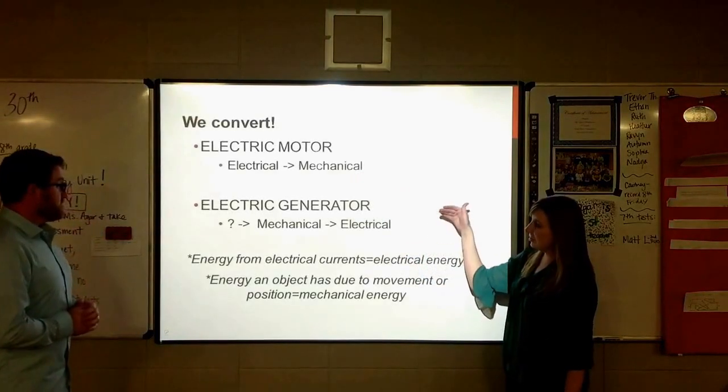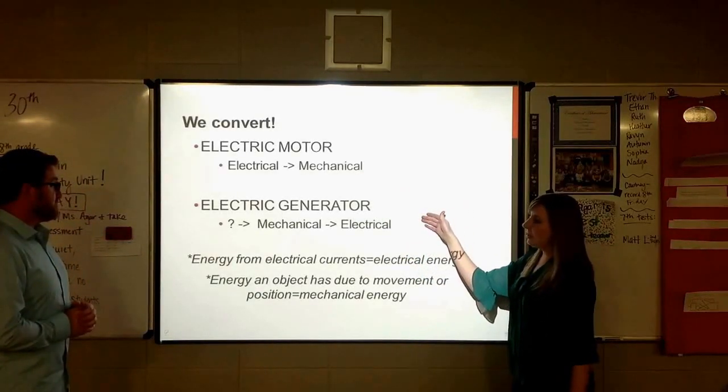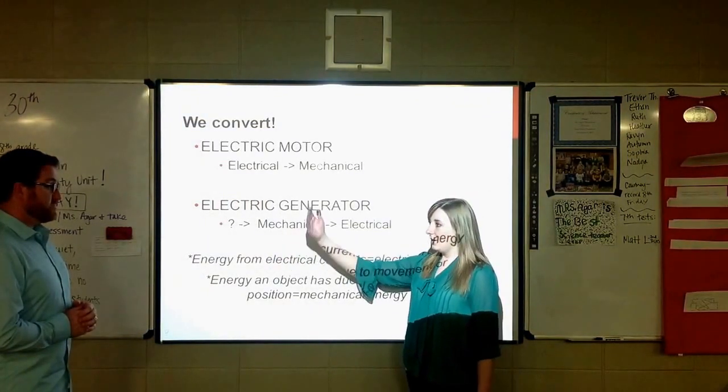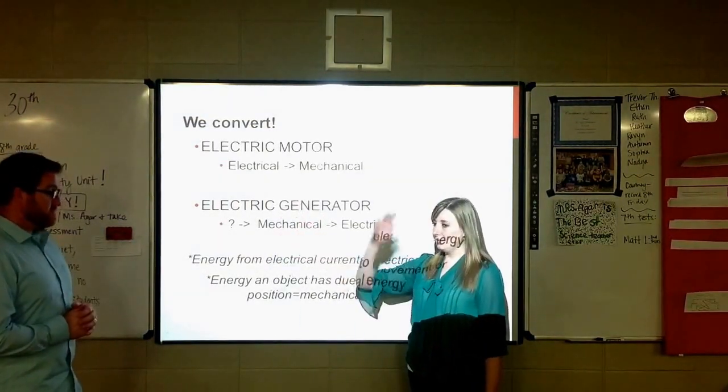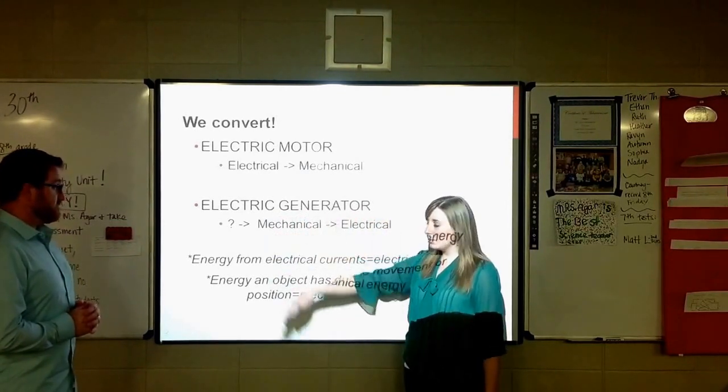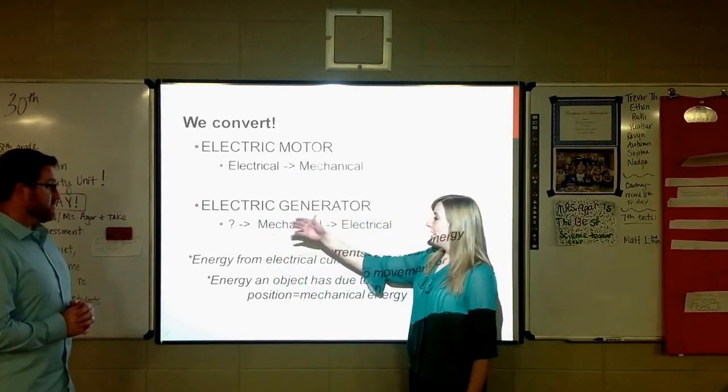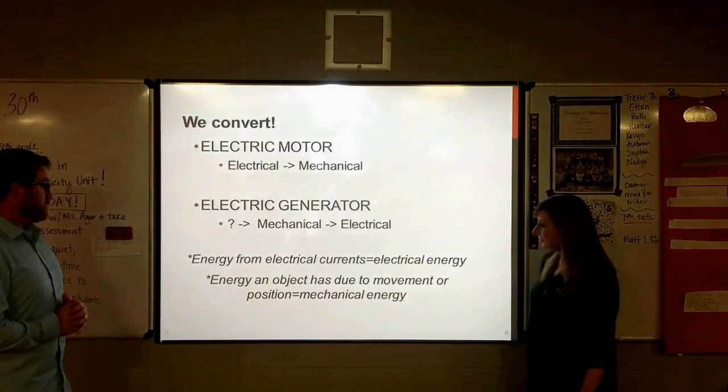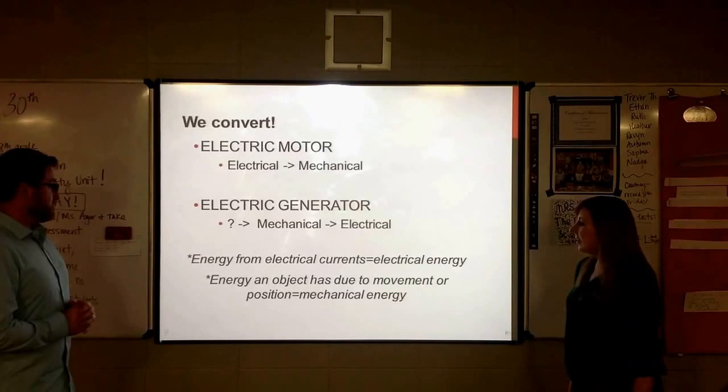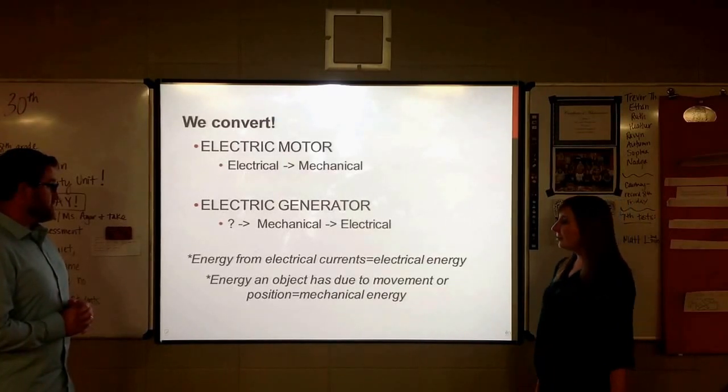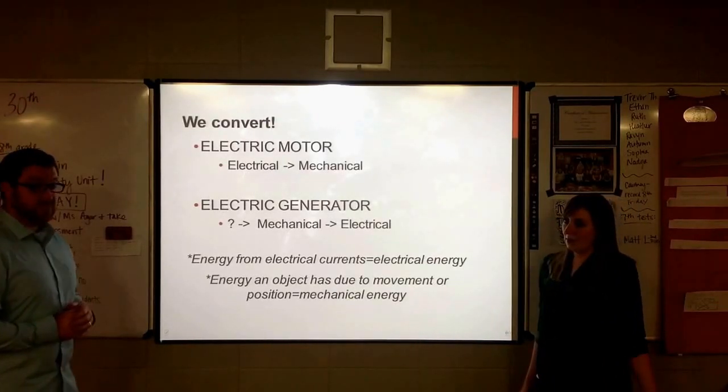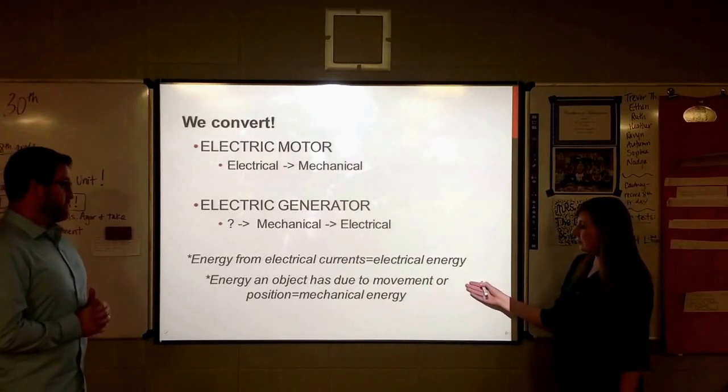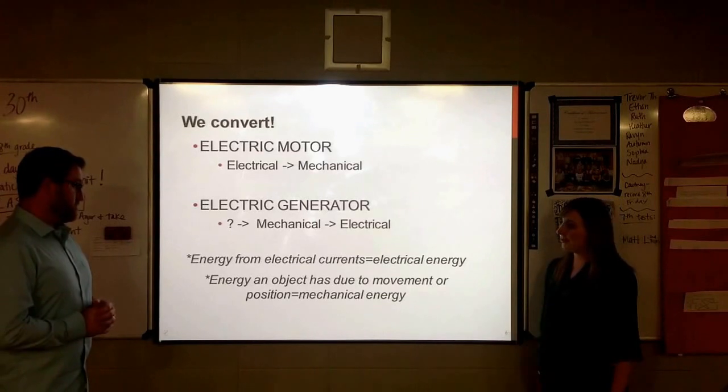So the electrical energy is causing a movement to happen. Our other example in an electric generator is we take some sort of movement. It could be from a hydroelectric water wheel. It could be from a windmill. Anything like that. Some sort of movement creating electricity for us. Remember that energy from electrical currents is just what we call electrical energy. And then energy an object has due to its movement or position is that mechanical energy.